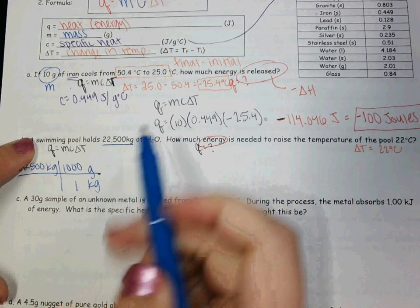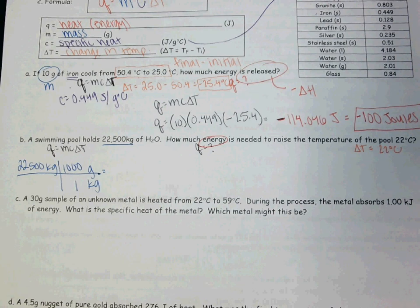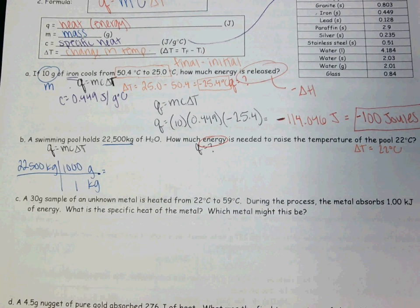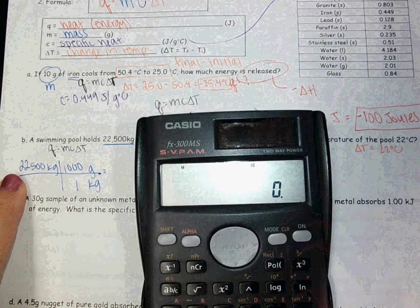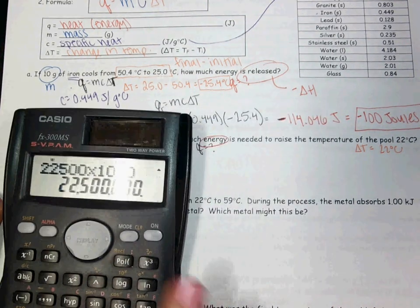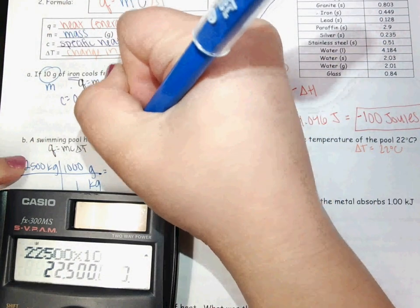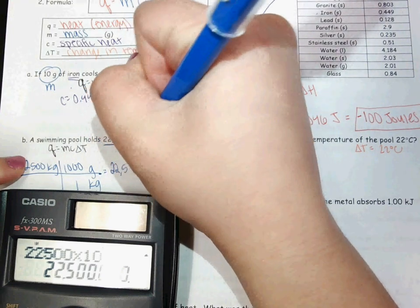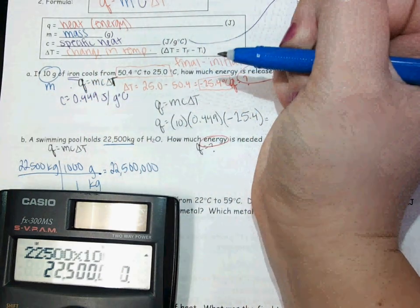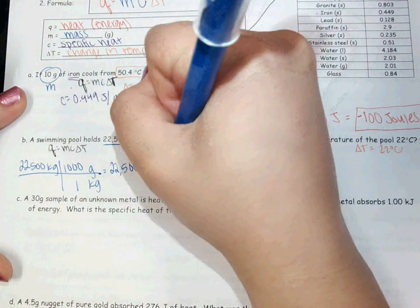So instead of dividing by 1,000, we are multiplying by 1,000. Which makes sense because this is talking about a swimming pool and it gives me a huge number of kilograms of water. The number of grams of water is going to be 1,000 times more than that. So 22,500 times 1,000 gives you 22,500,000, and your unit would be grams of H₂O.